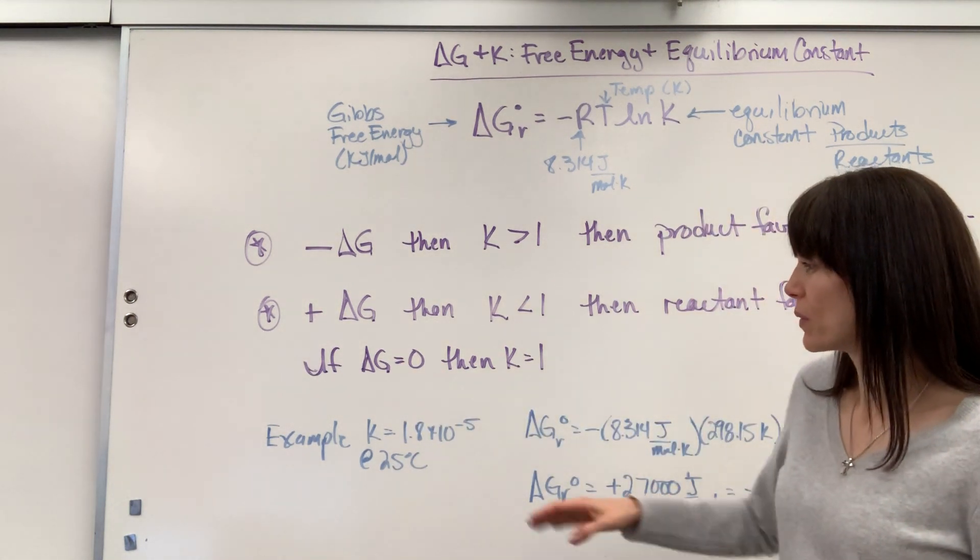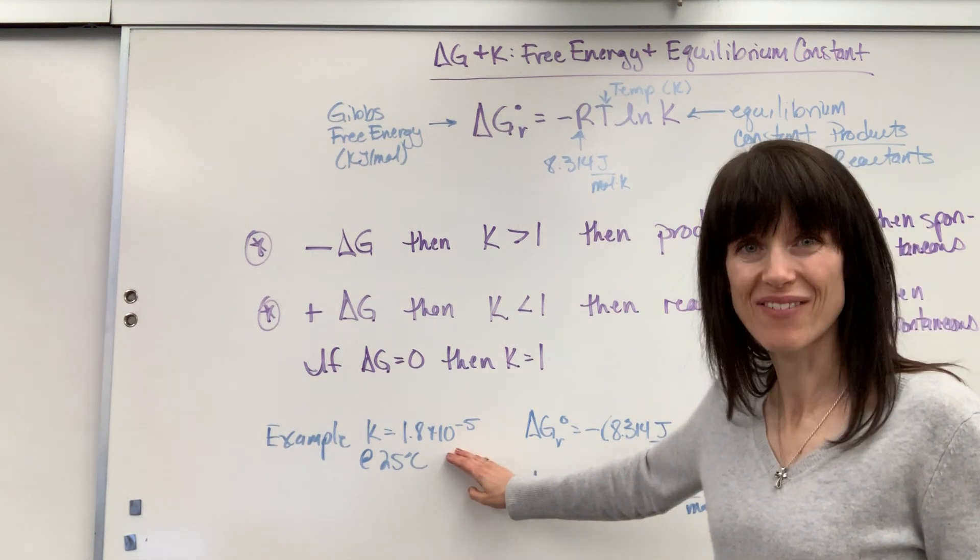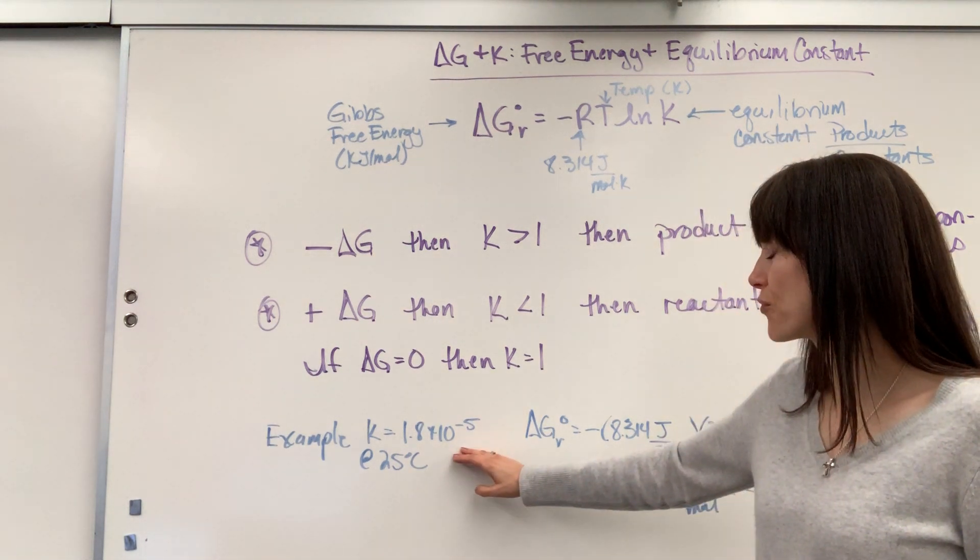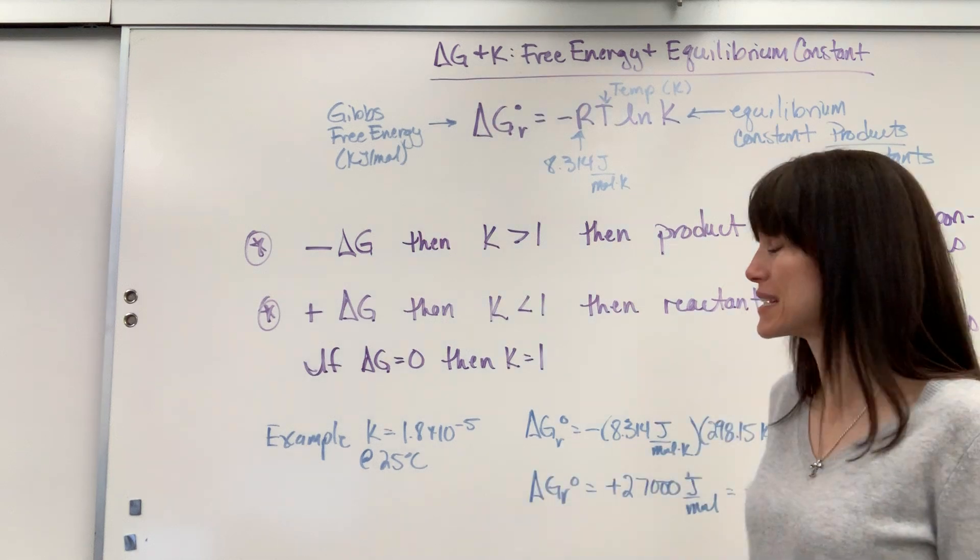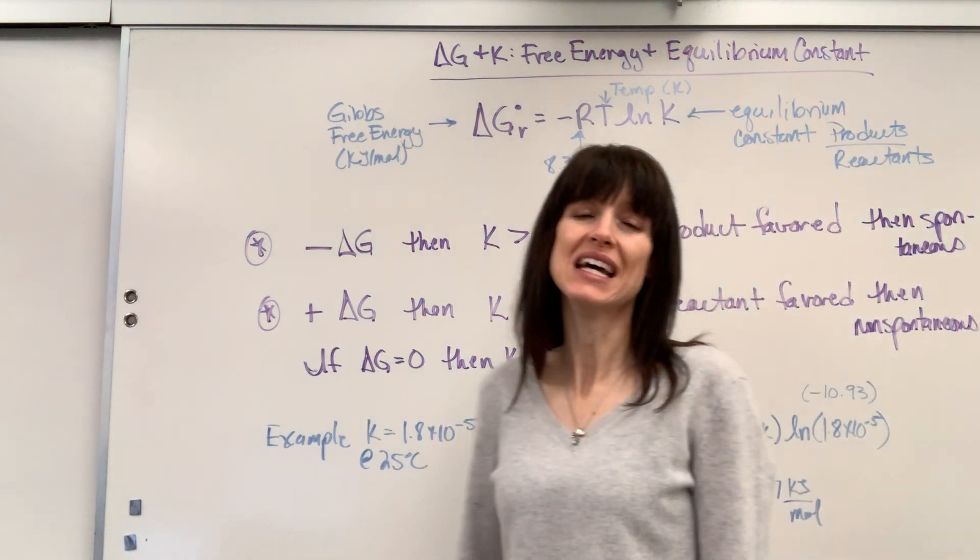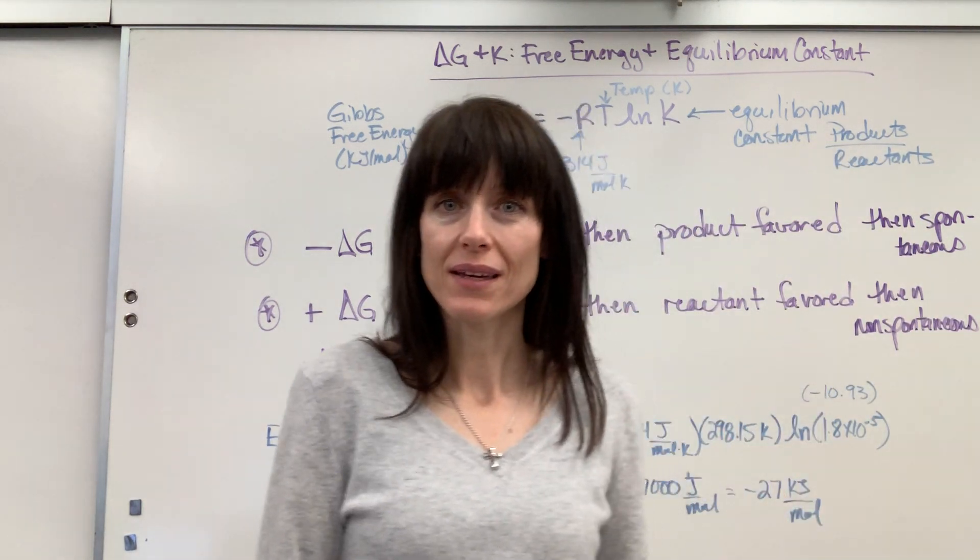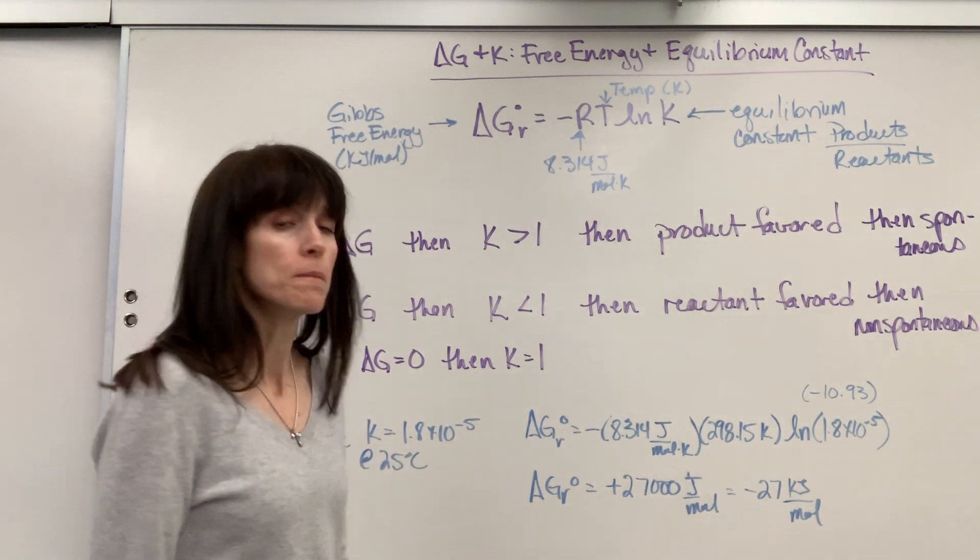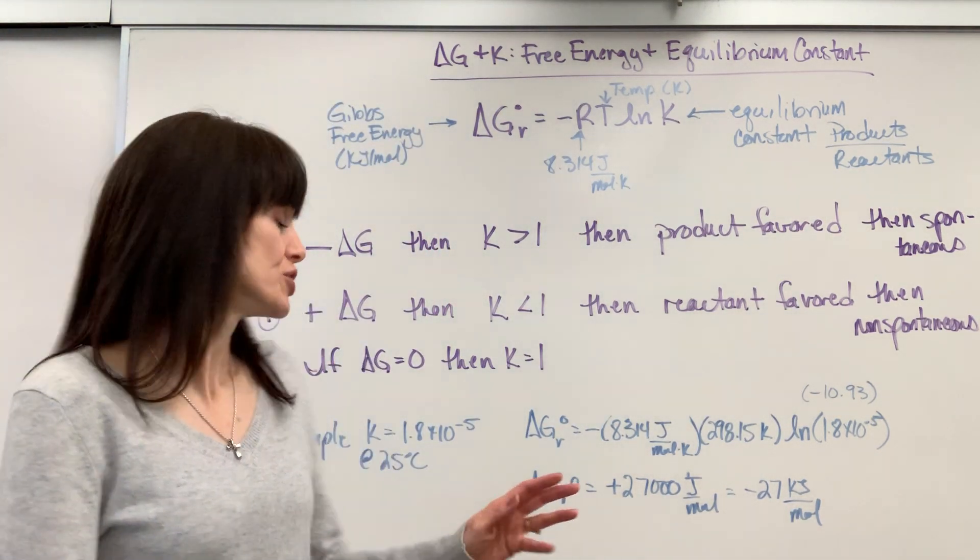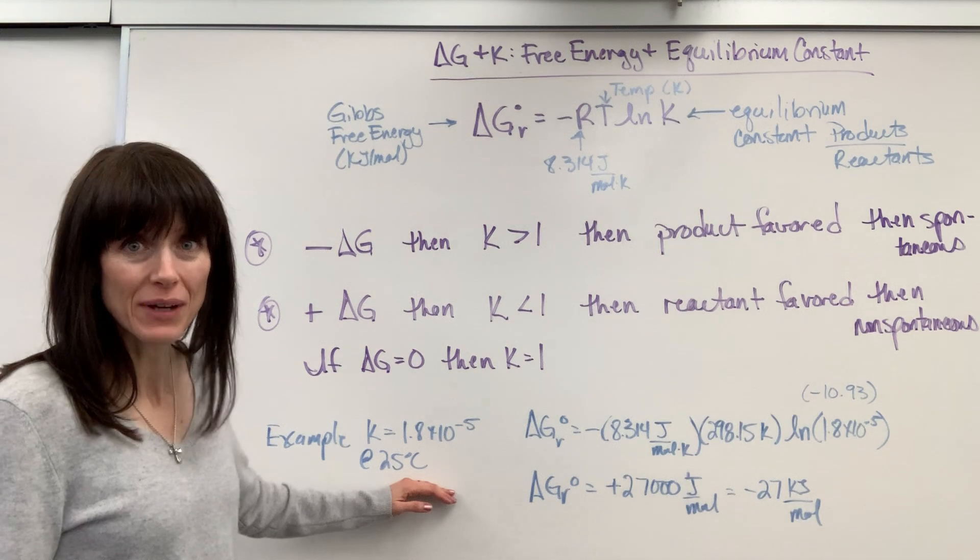Now, an example. I took the Ka value, equilibrium expression, acid ionization for acetic acid, 1.8 times 10 to the minus 5, at 25 degrees C, and we want to determine what is the delta G value. Now, I want to stop you. Just knowing that this is very reactant favored,